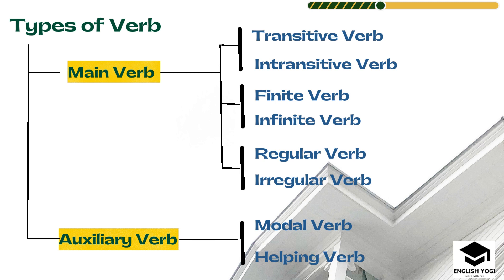Main verb is also divided according to function and form. As we can see here: transitive verb, intransitive verb, finite verb, infinite verb, regular verb, and irregular verb. These are the types of main verb. Similarly, auxiliary verb is also a type of verb, and auxiliary verbs include modal verbs and helping verbs.